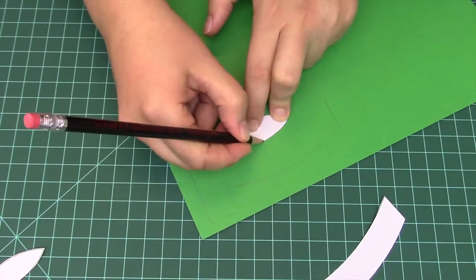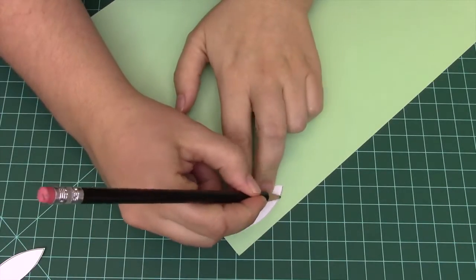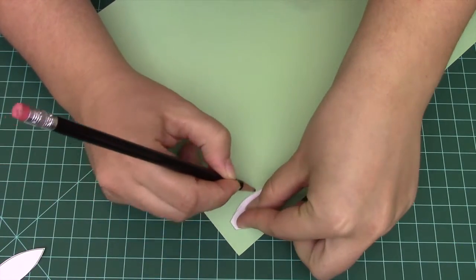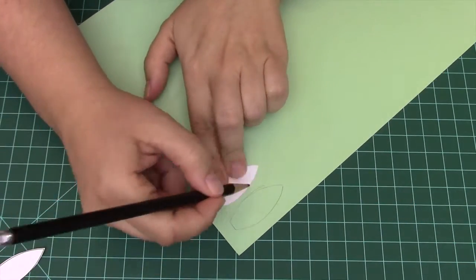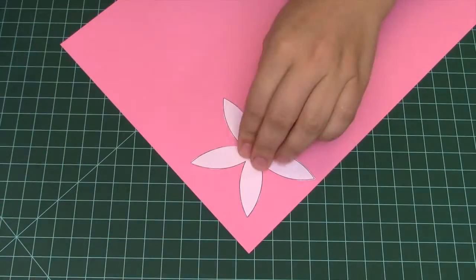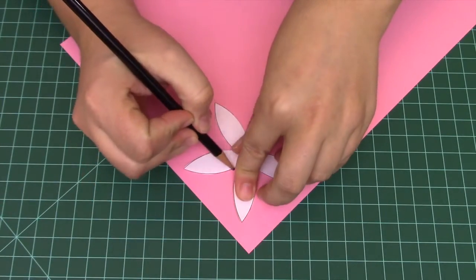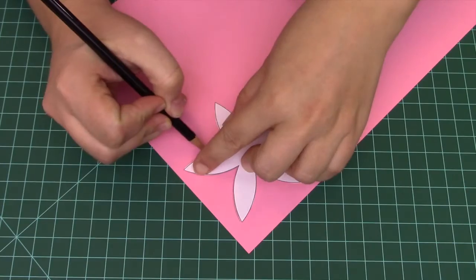Also trace three of the leaves onto the green construction paper. These will be decoration later. And finally, trace the flower onto one of your sheets for the flower paper.